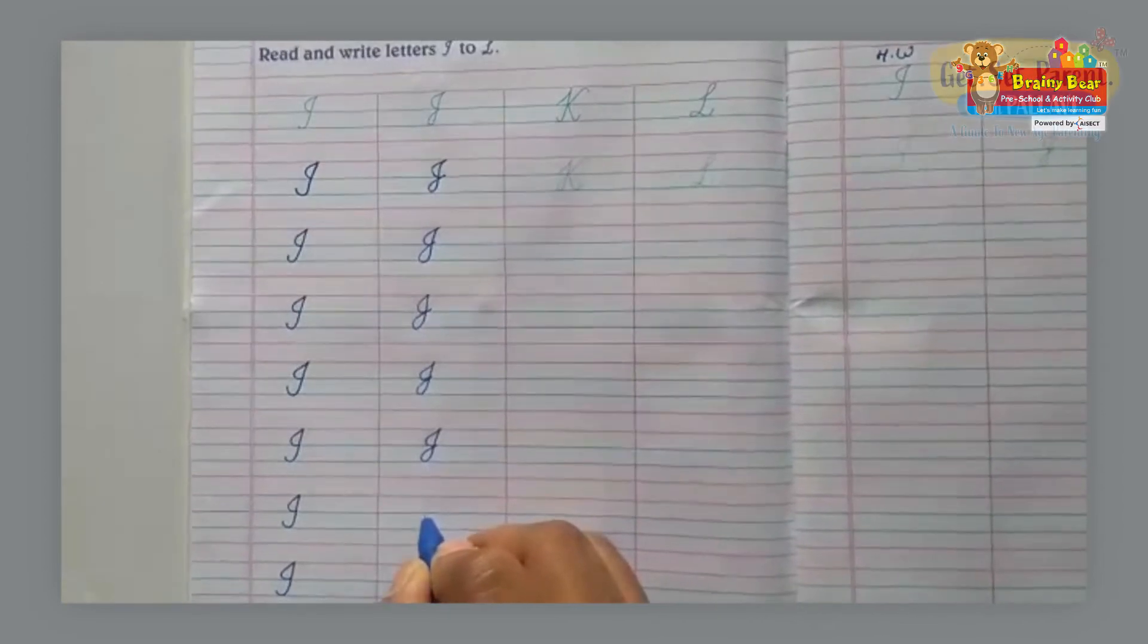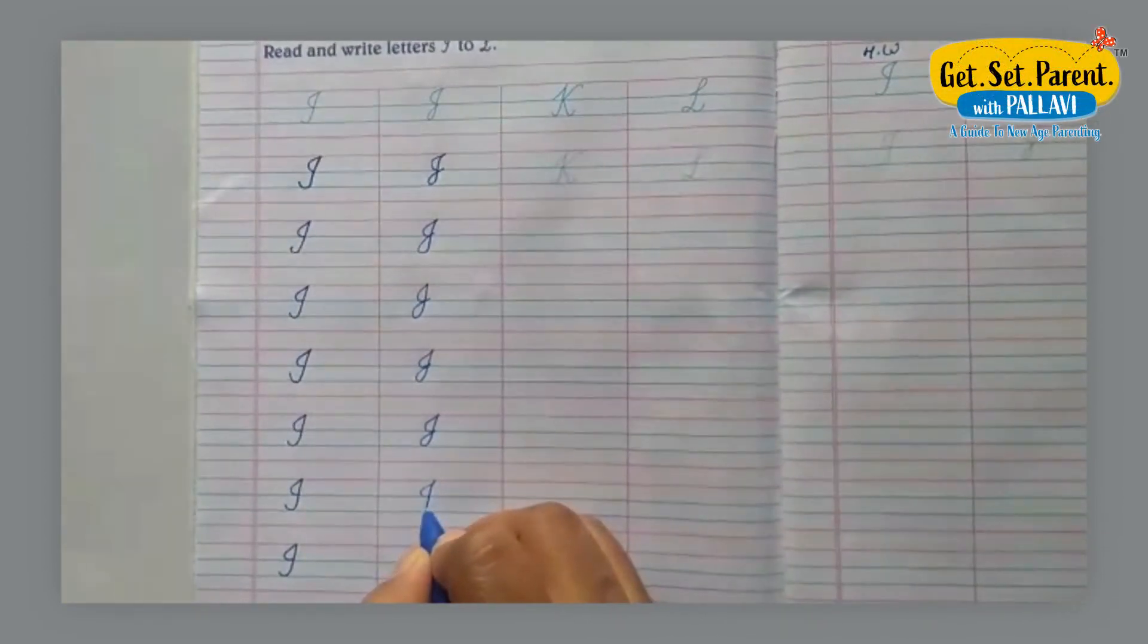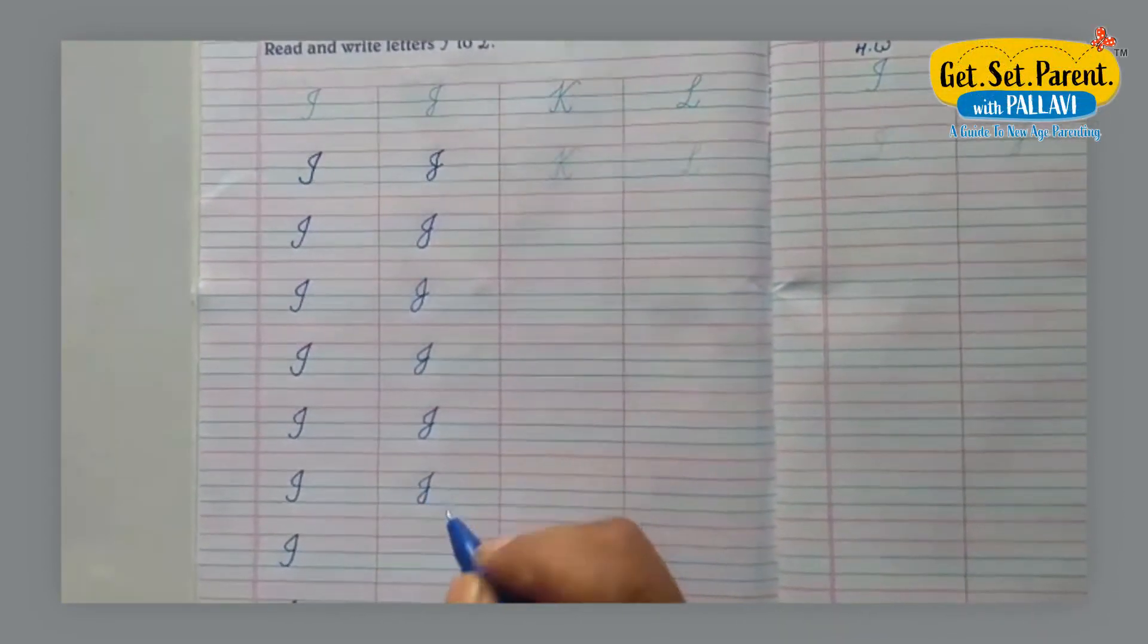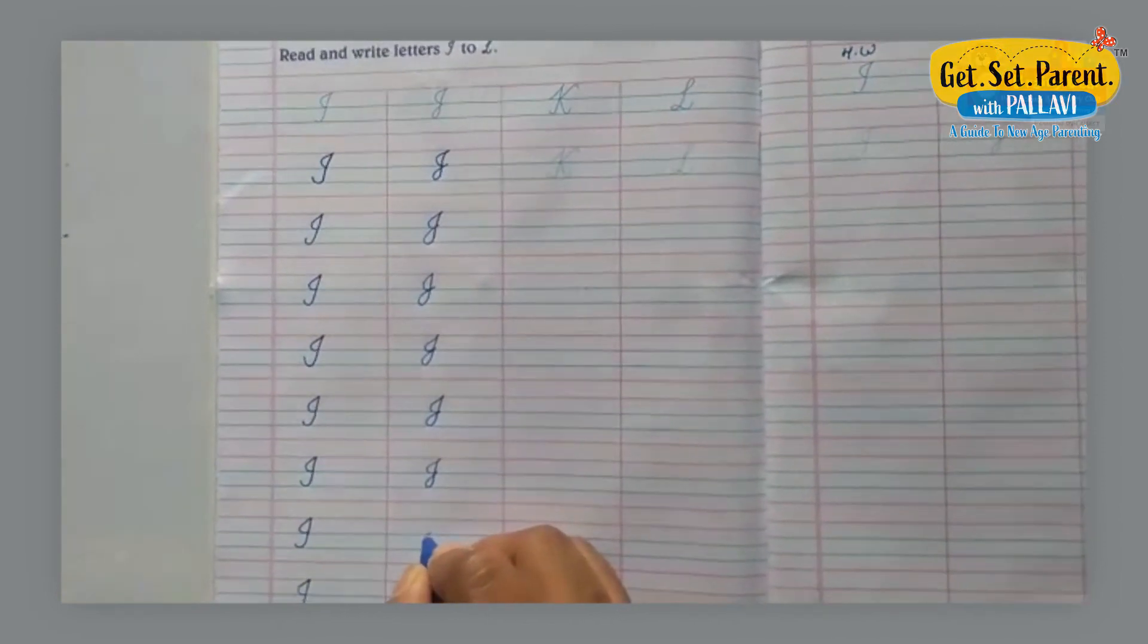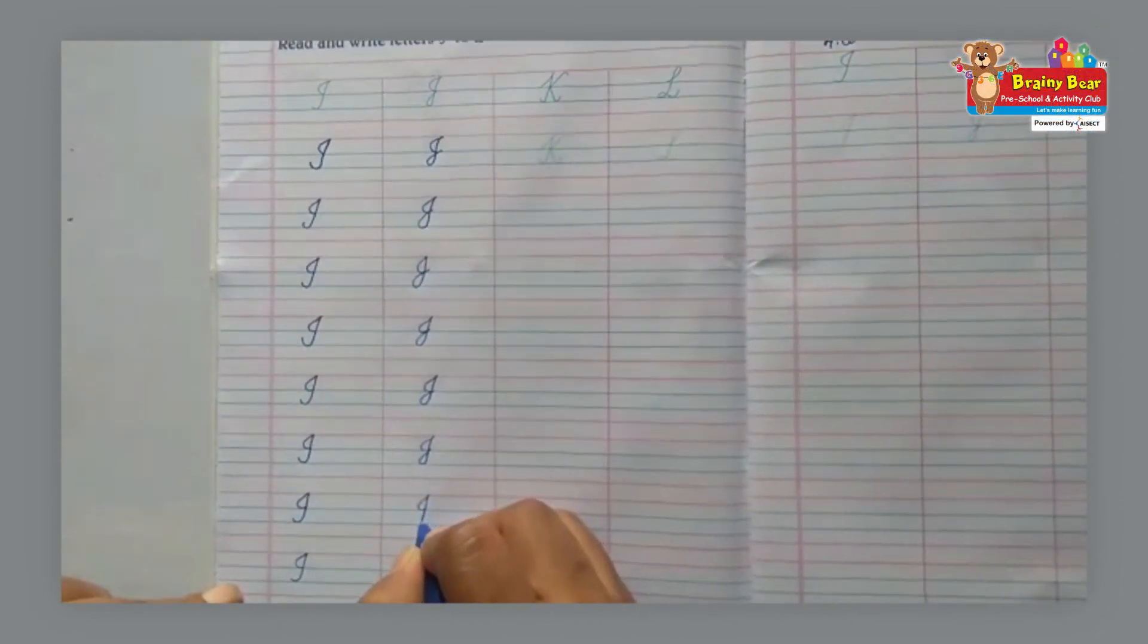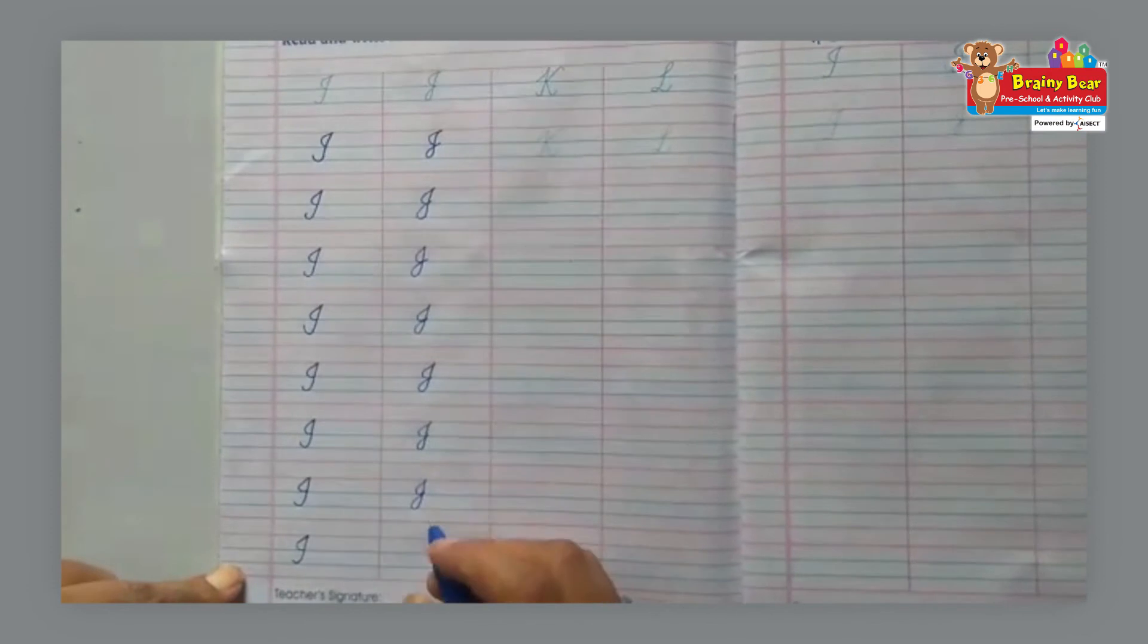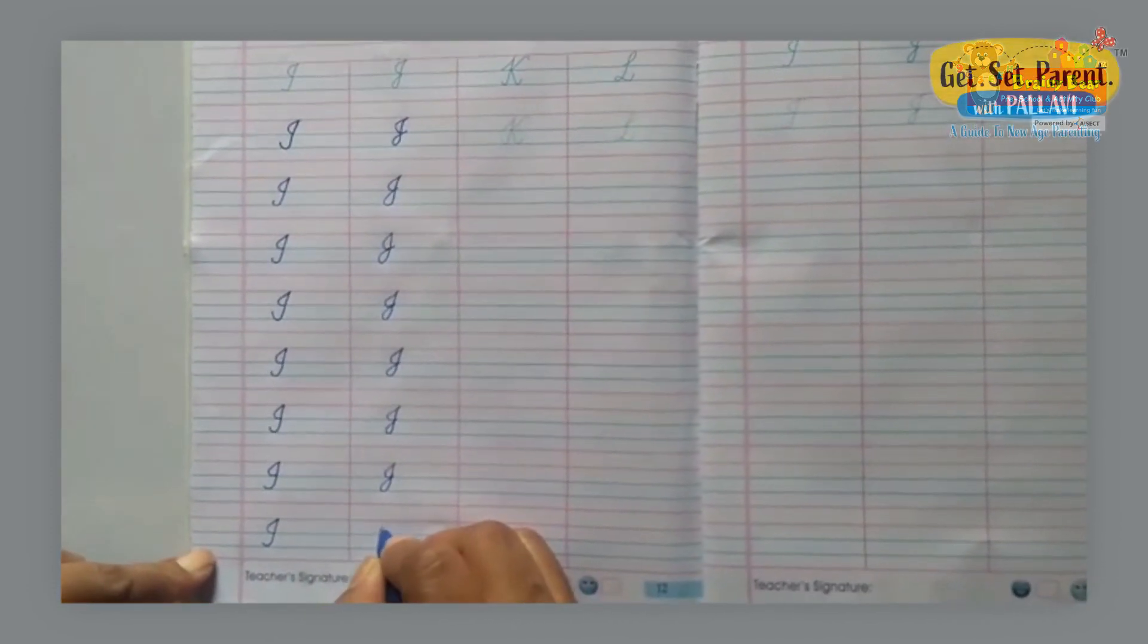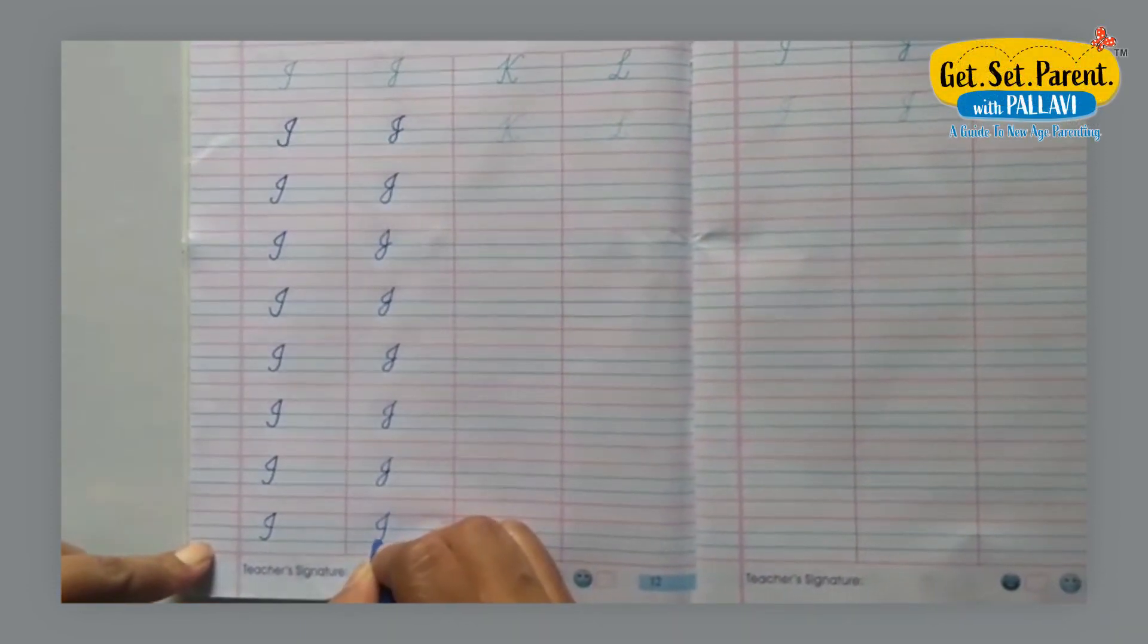Again, first make I, go down and loop. Again I and the second loop like this and this.